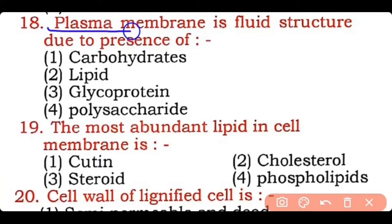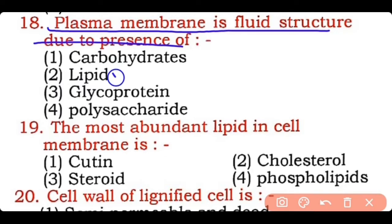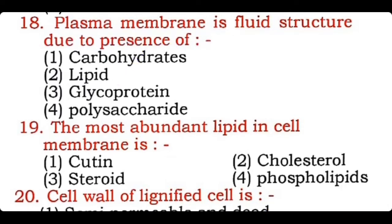Question 18: Plasma membrane is a fluid structure due to the presence of — carbohydrate, lipid, glycoprotein, or polysaccharides? Correct answer is option two — the fluid structure of plasma membrane is due to lipids, which can be saturated and unsaturated.